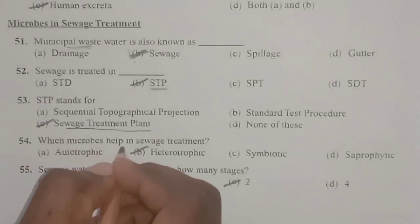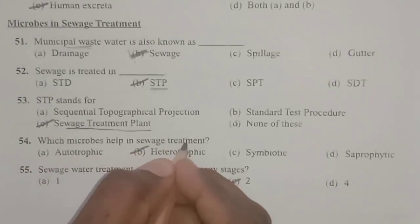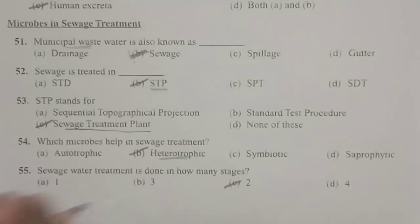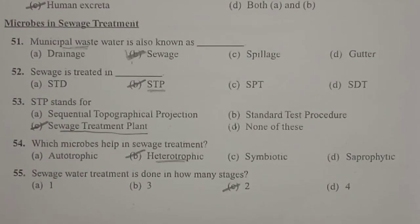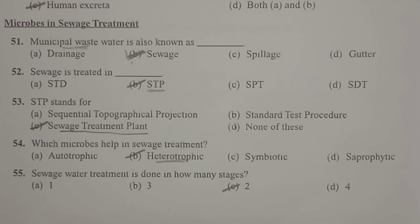Next: which microbes help in sewage treatment? They are the heterotrophic bacteria — the microbes involved may be bacteria or fungi but they are usually heterotrophic. You know autotrophic organisms can prepare their own food, whereas heterotrophic organisms are dependent on other organisms. The main microbes involved in sewage treatment are heterotrophic microorganisms.